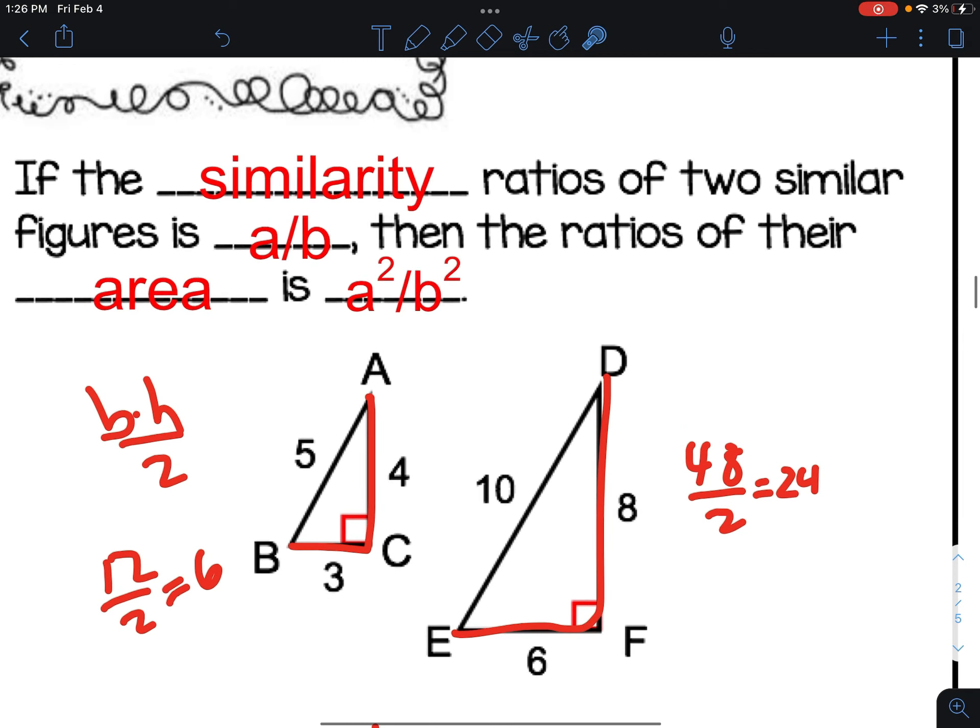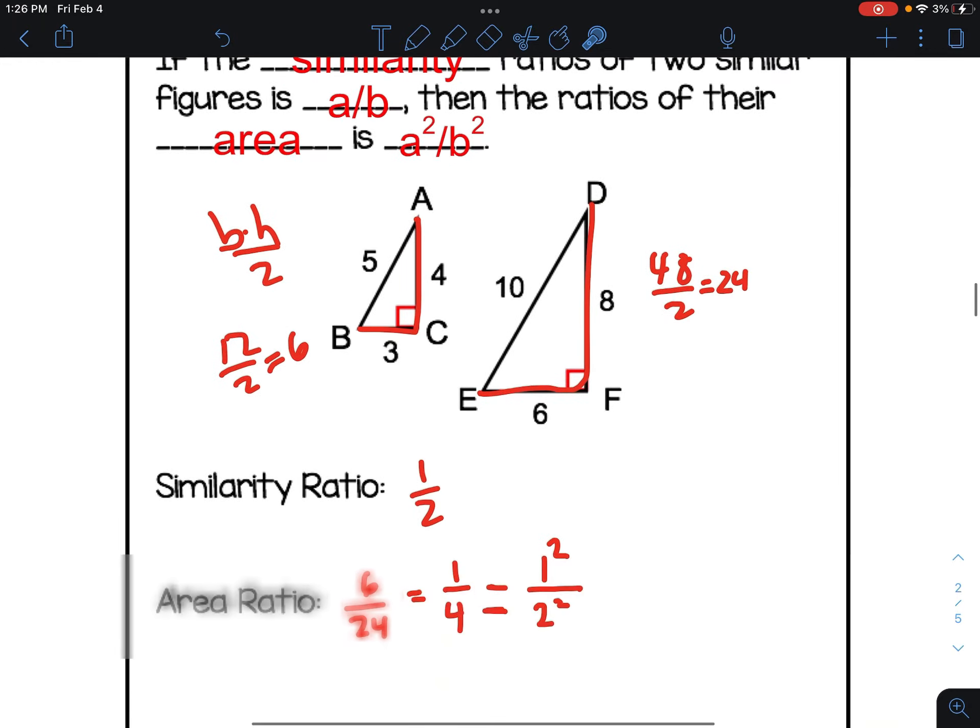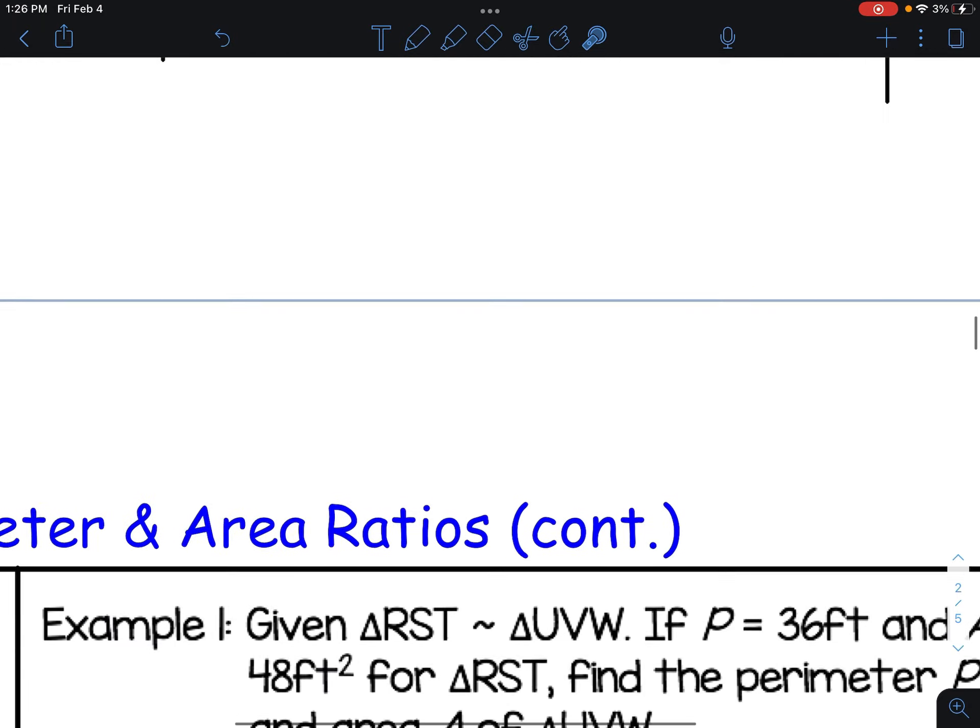So how can we summarize that similarity ratio to area ratio? Well, if we know the similarity ratio is a to b, in this case it was 1 to 2, then the ratio of the area of both those shapes is a squared to b squared. So those are the two that you need to remember.